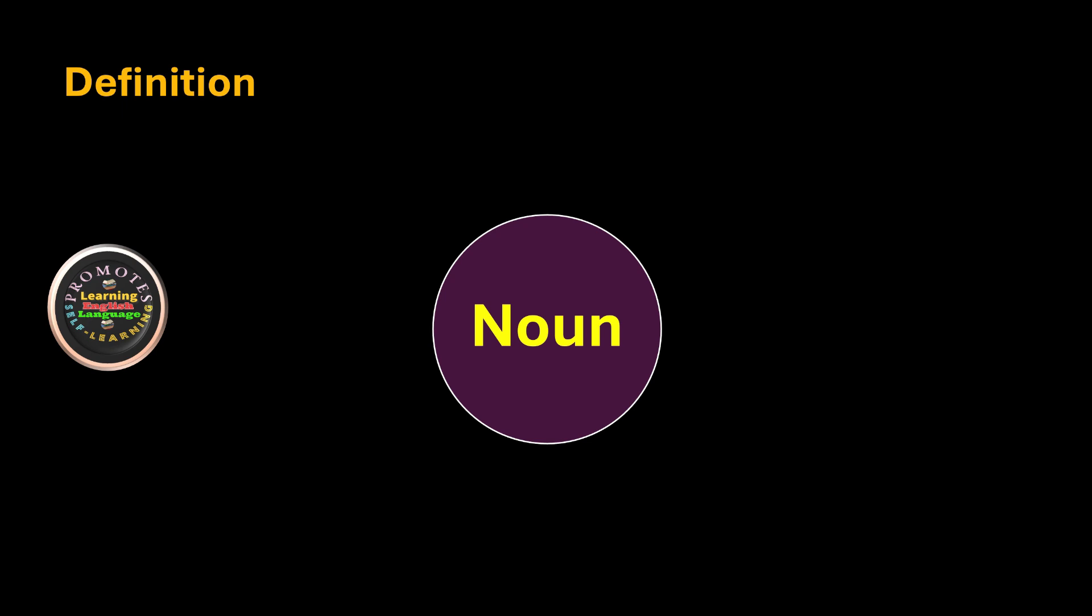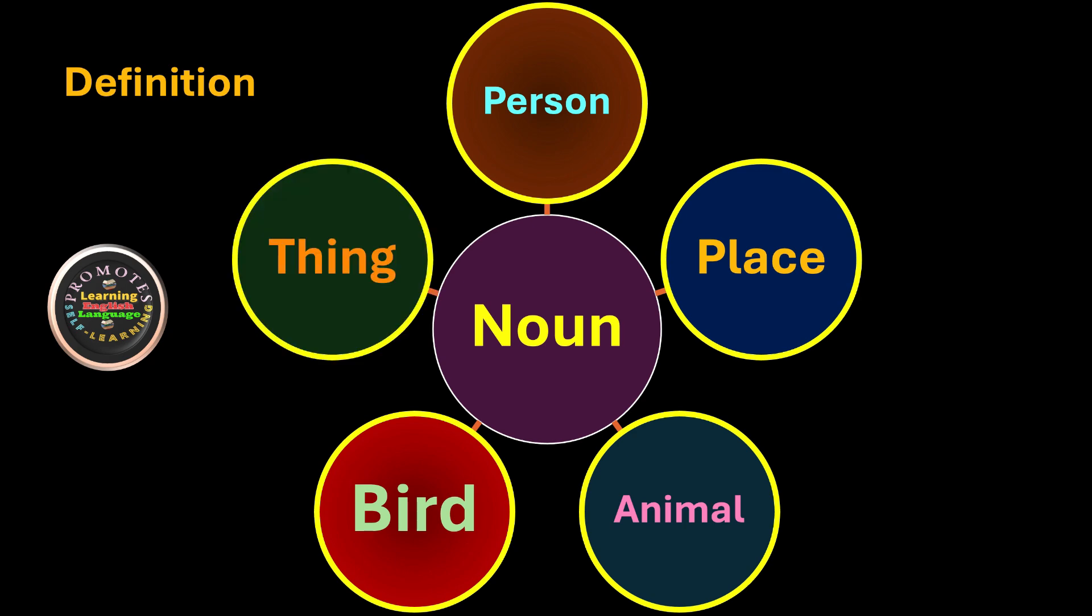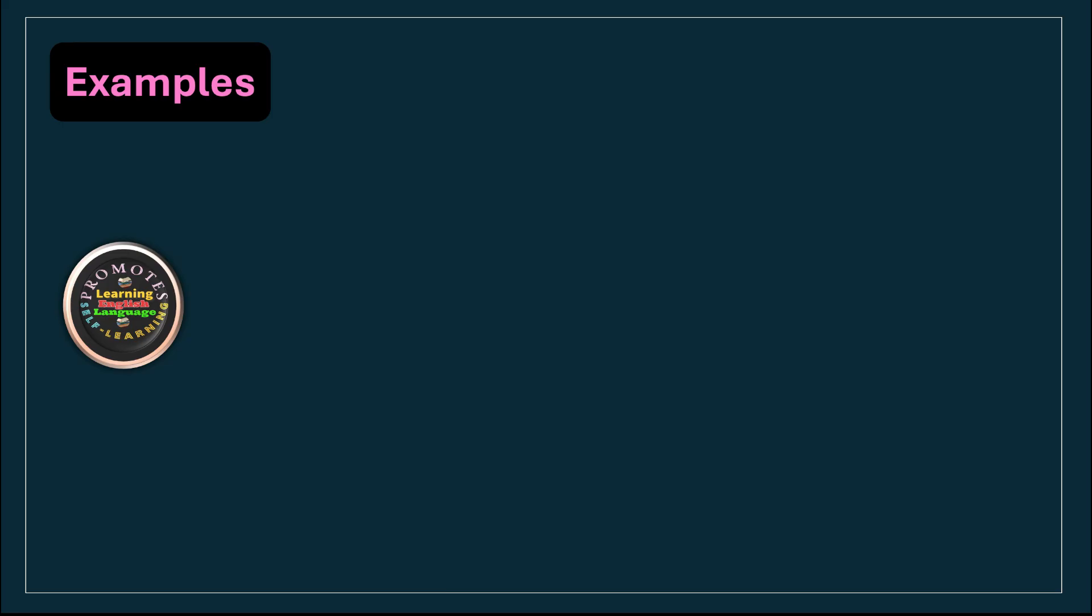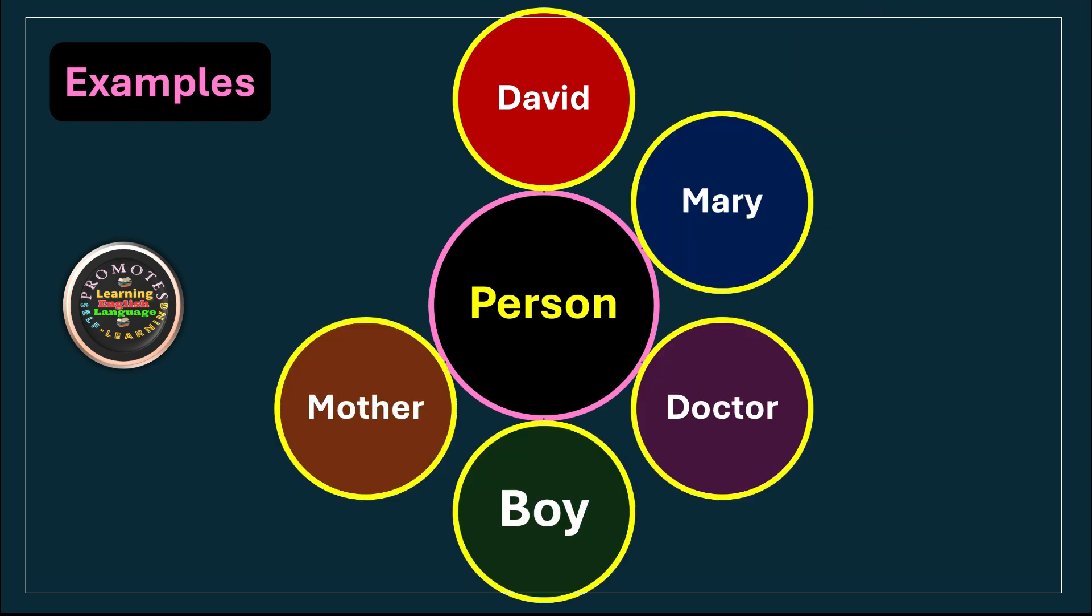Now let's talk about examples. The name of person may be referred to as David, Mary, doctor, boy, mother, and farmer. So all these words refer to the person and they are nouns.